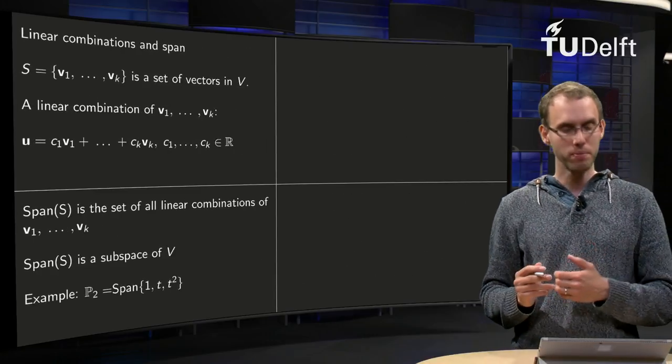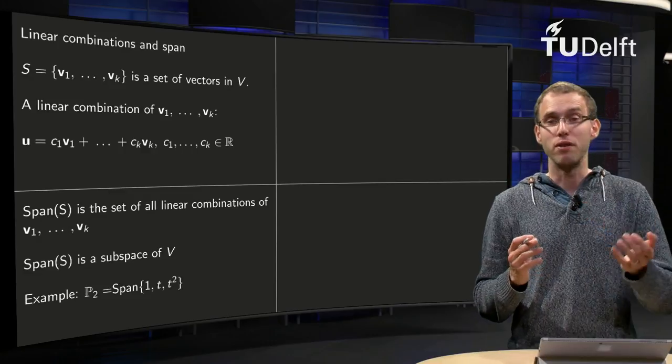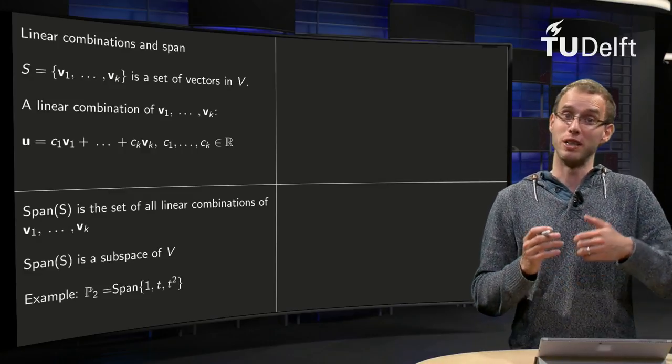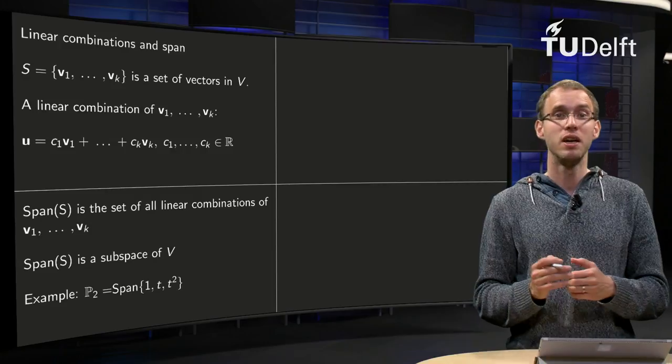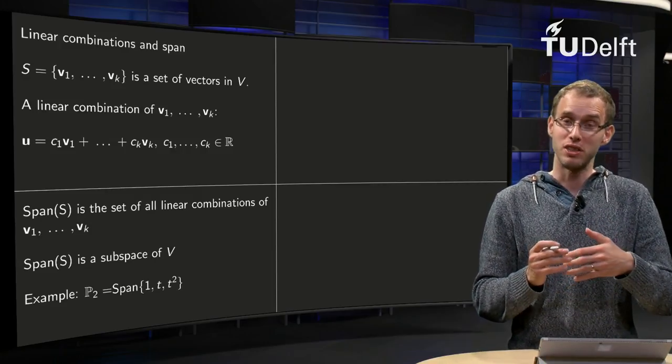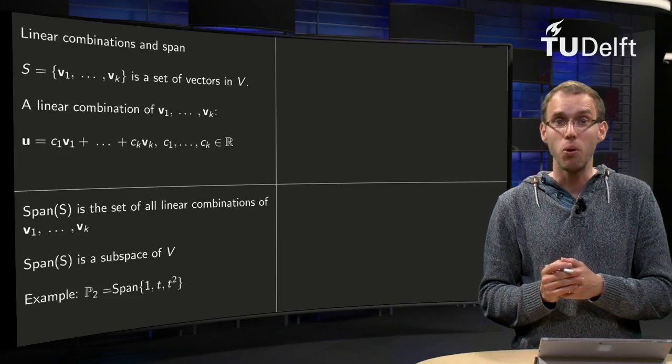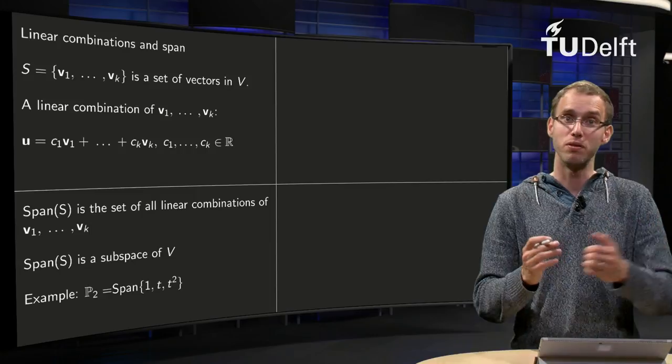What about span? Well, it goes the same way. The span of a number of vectors in R^n is the set of all linear combinations of those vectors. I will do exactly the same for the span of vectors in a general vector space. The span of S in this case is the set of all linear combinations of V1 up to Vk.